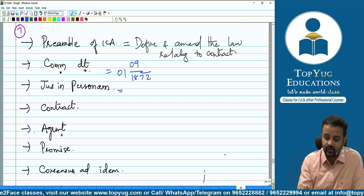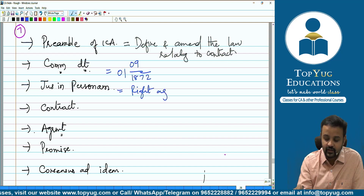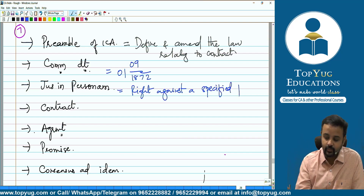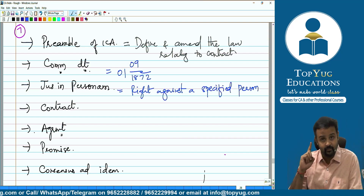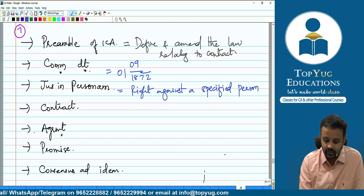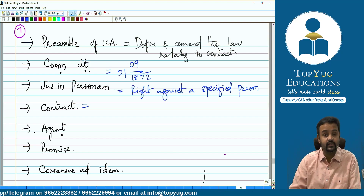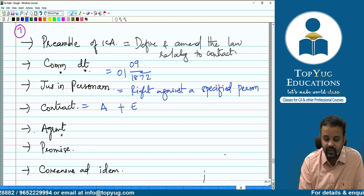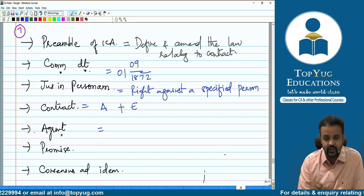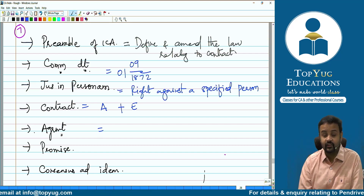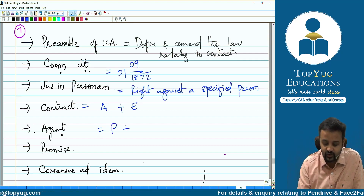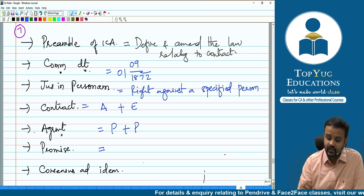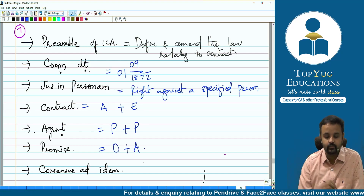What does 'jus in personam' mean? It means a right against a specified person. If you are talking about a thing, that is 'jus in rem'. The basis for the Indian Contract Act is jus in personam. Contract equals agreement plus enforceability. Agreement is every promise or set of promises forming consideration for each other — promise plus promise. An offer when accepted becomes a promise. Contract is defined in Section 2(h), agreement in Section 2(e), and promise in Section 2(b).